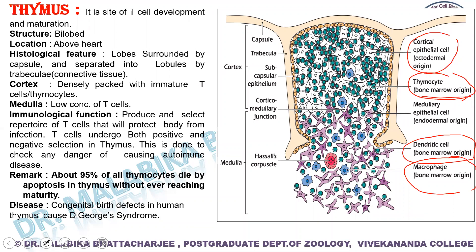The immunological function of the thymus is to produce and select a huge variety of T cells that protect our body from infection. It is within the thymus that T cells undergo both positive and negative selection — whether T cells are reactive to foreign antigen or to self-antigen. T cells that are too reactive to self-antigen are forced to die, and T cells that do not react with foreign antigen are also forced to die.